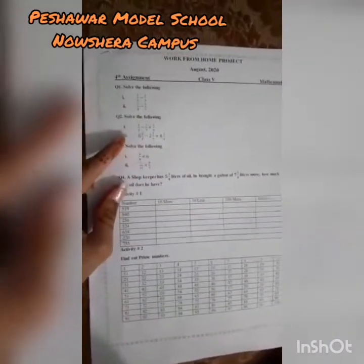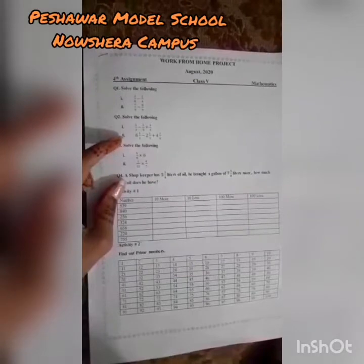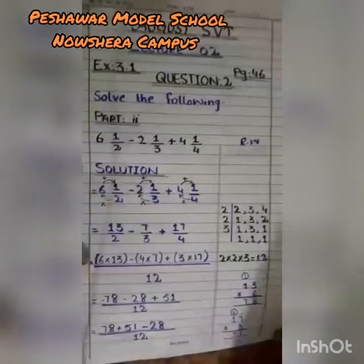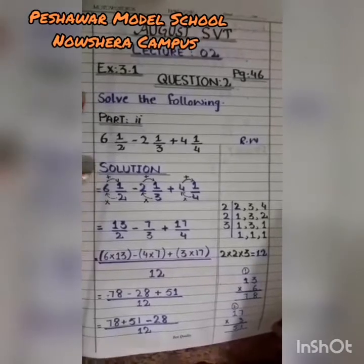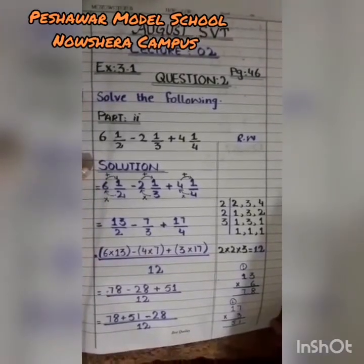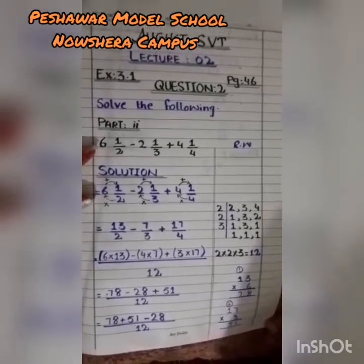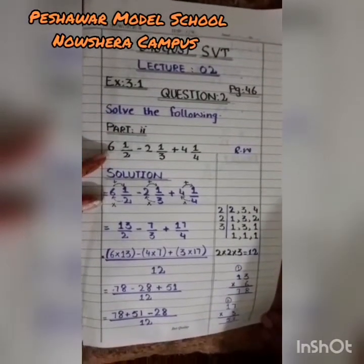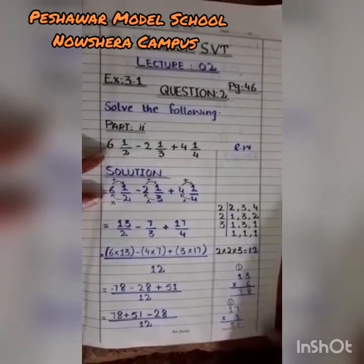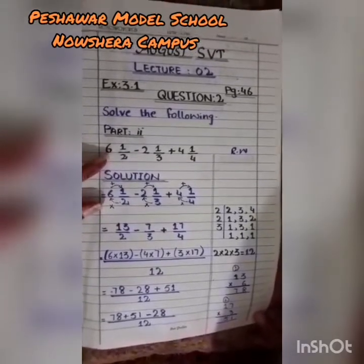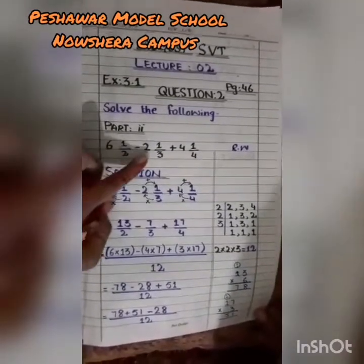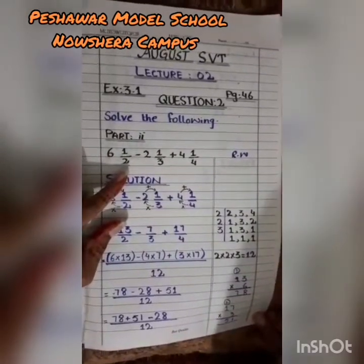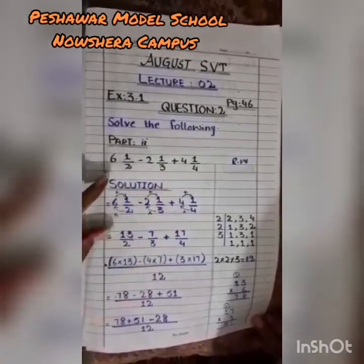Question number two: Solve the following. Part one is in simple form. Part two is: 6 whole 1/2 minus 2 whole 1/3 plus 4 whole 1/4. We start lecture number two, August Exercise 3.1, book page number 46, question number two. We will solve part two first, because part two has mixed fractions. We need to convert mixed fractions into improper fractions, after which you will be able to solve part one as well.